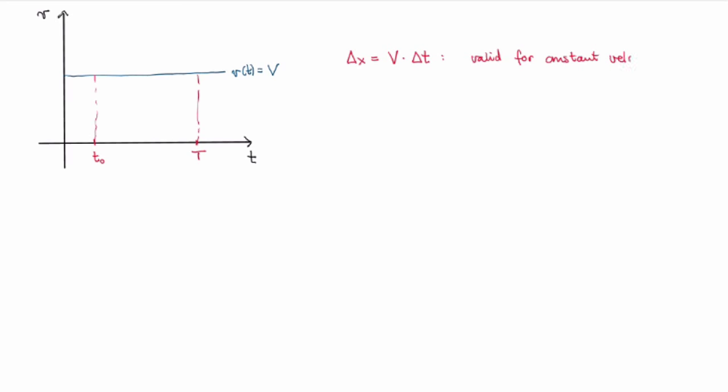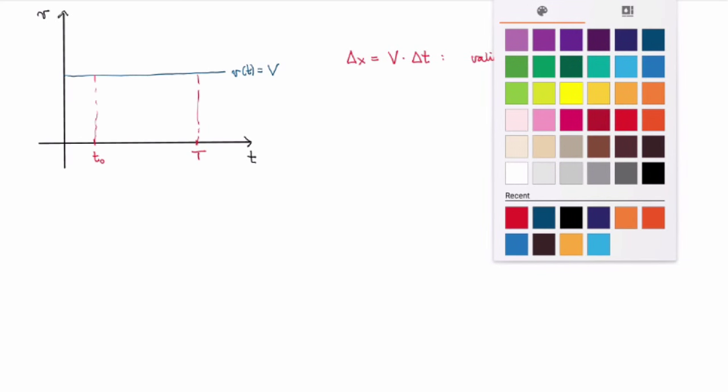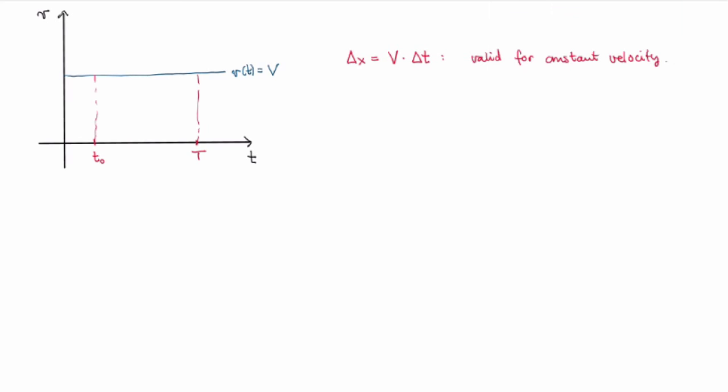So how do we actually calculate the distance traveled if the velocity is not constant? Let's notice one thing: in the case where velocity is constant, what is Δx actually calculating? Capital V is the height of the rectangle, and Δt is the width of the rectangle on the graph. So Δx is calculating the area under the velocity function — here Δx equals the area. That's important for the more general case.